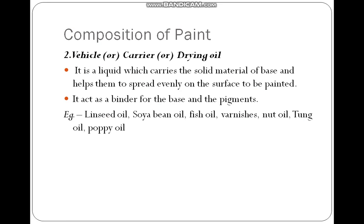The next composition is the vehicle, which is very important to carry the paint over all the surface of the wall. It is a liquid which carries the solid material of the base and helps them to spread evenly on the surface to be painted. It acts as a binder for the base and the pigments. Examples include linseed oil, soya bean oil, fish oil, varnish, nut oil, tung oil, and poppy oil, which can be used as a vehicle, carrier, or drying oil.